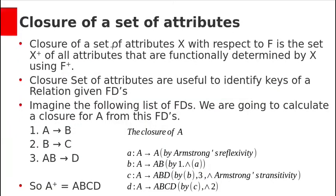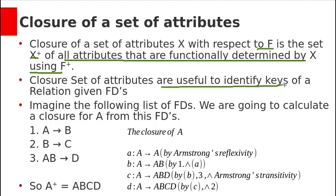The closure set of attributes: the closure of a set of attributes X with respect to a set of functional dependencies F is denoted X+, and is the set of all attributes that are functionally determined by X using F+. Closure of attributes is useful to identify keys of a relation when functional dependencies are given. We are going to calculate the closure for A, denoted A+. A+ is the set of all attributes functionally determined by A using F+.